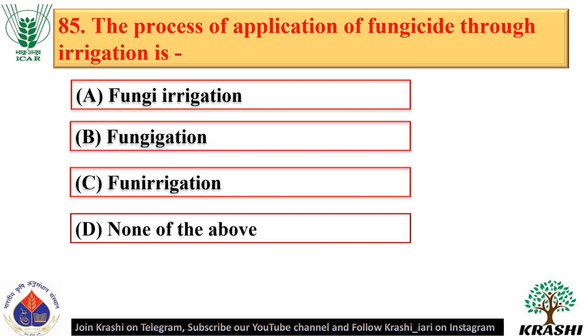Question number 85. The process of application of fungicide through irrigation is called fungigation — option B.